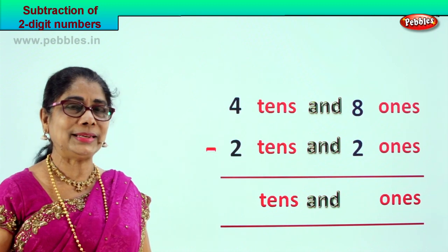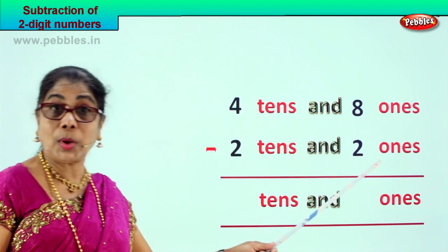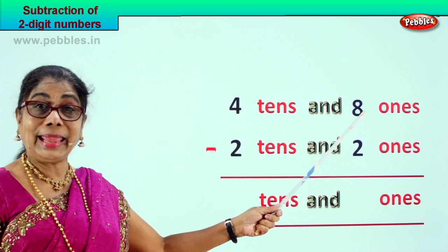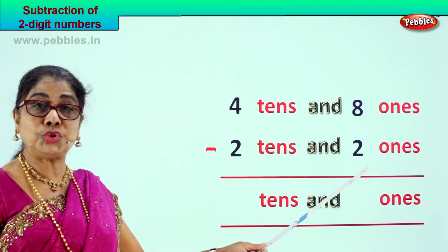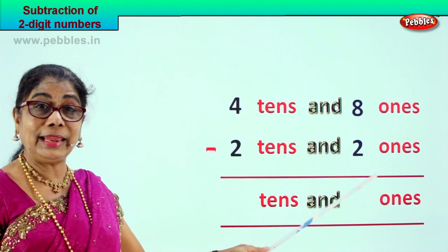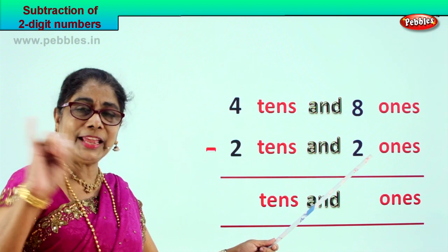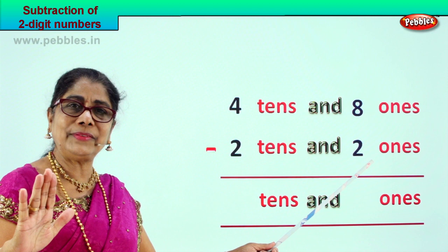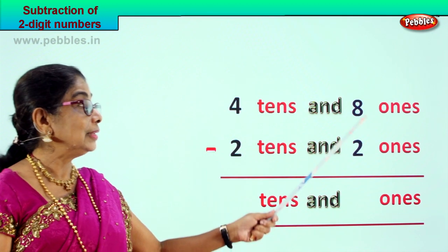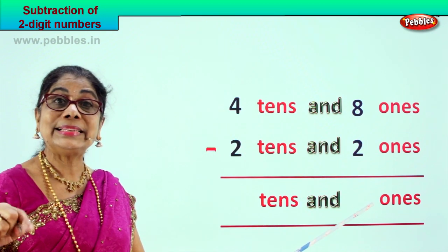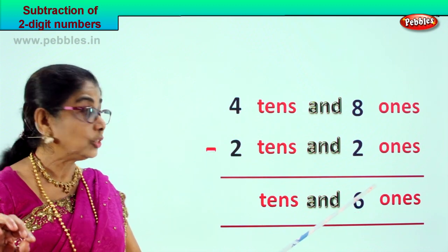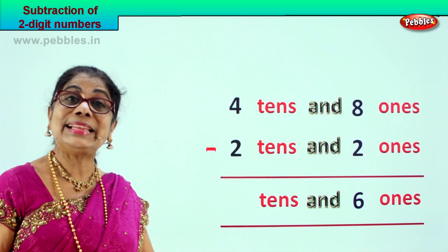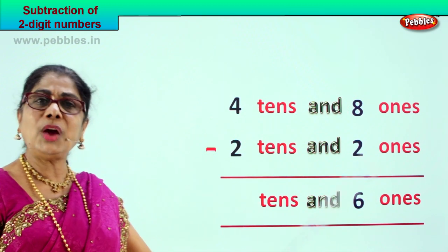Subtraction of 2 digit numbers. Now we will take the ones first. We have 8 ones and 2 ones. 8 minus 2 — 8 take away 2 — 2, 3, 4, 5, 6, 7, 8. So 8 minus 2 is 6. We write down here 6 ones. 8 ones minus 2 ones is 6 ones.